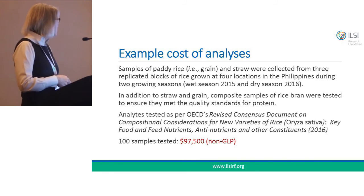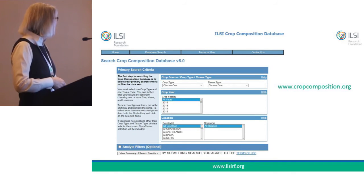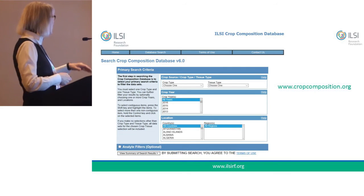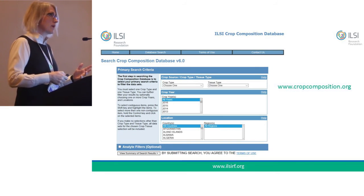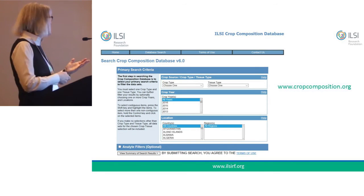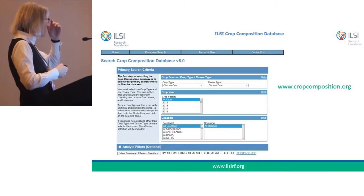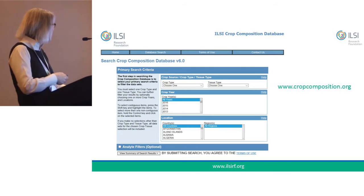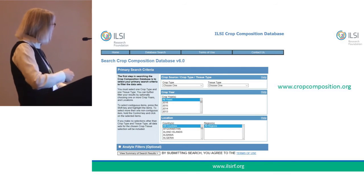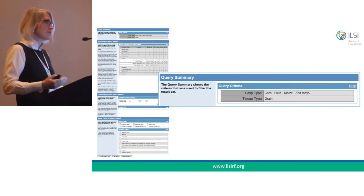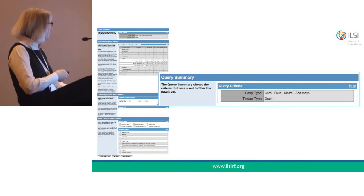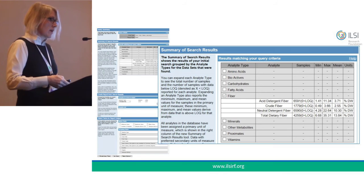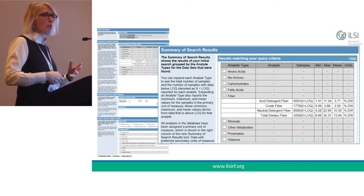To quickly introduce you to the database itself: the URL is on the screen, and this is the landing page. You can select the crop and the tissue type you want information about. The interface allows you to query for specific nutrients or anti-nutrients and create a customized search report by putting in your criteria. There is also a detailed user guide available.